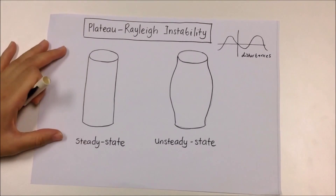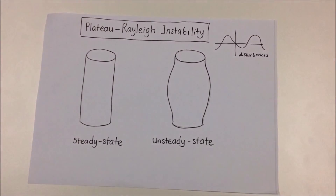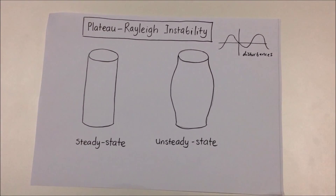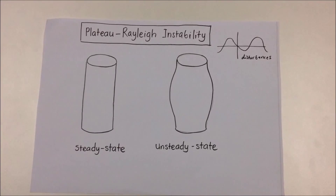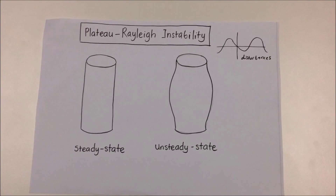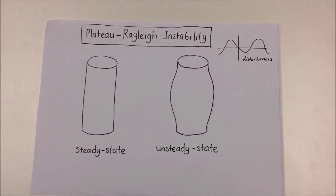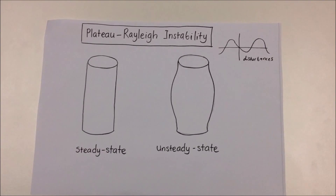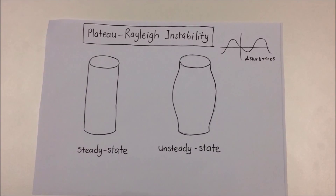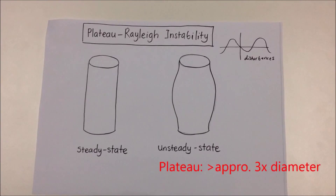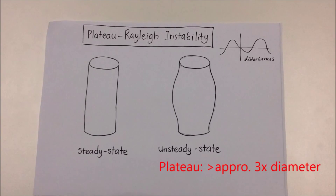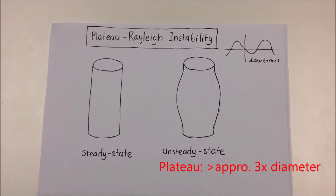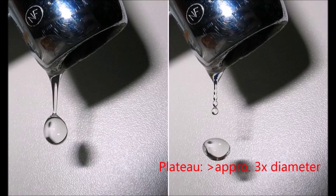The Plateau-Rayleigh Instability concept pictures perturbations or disturbances in water columns as sinusoidal waves. In 1873, Plateau found that a practical falling stream of water will break up into drops if its wavelength is greater than approximately 3 times its diameter.